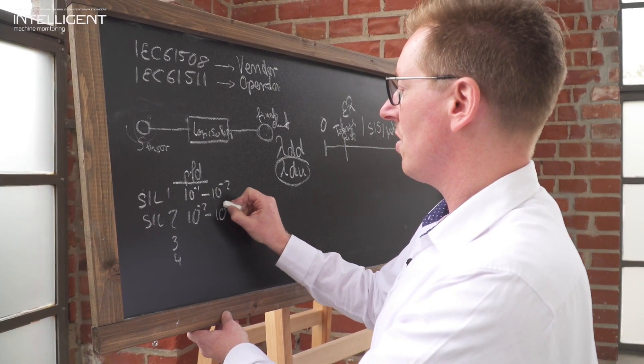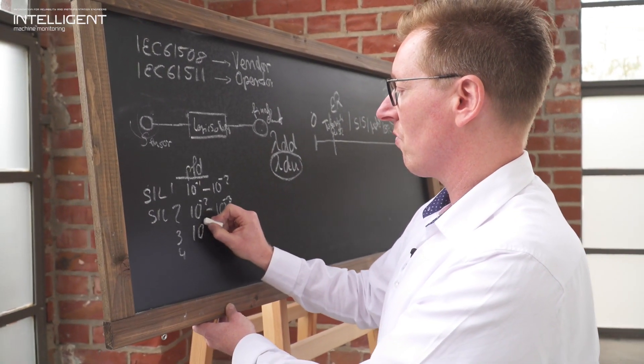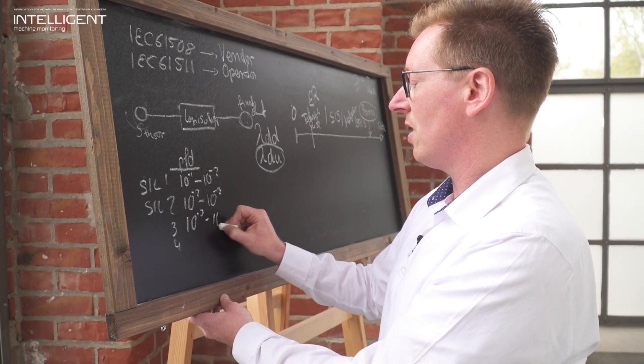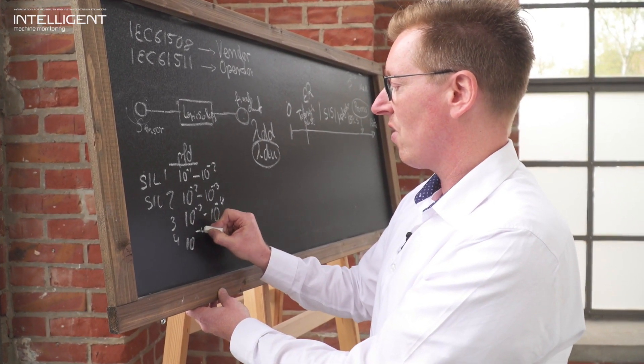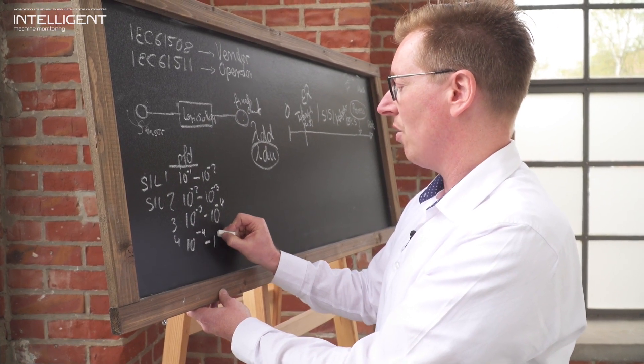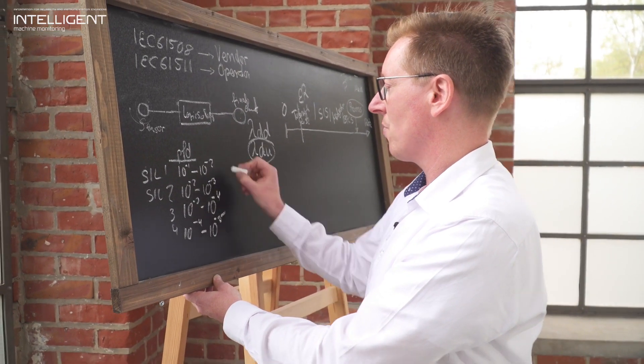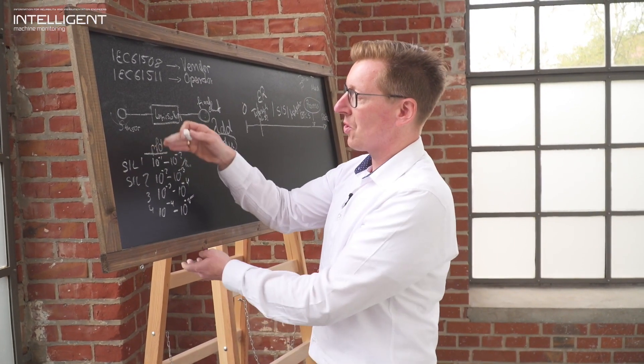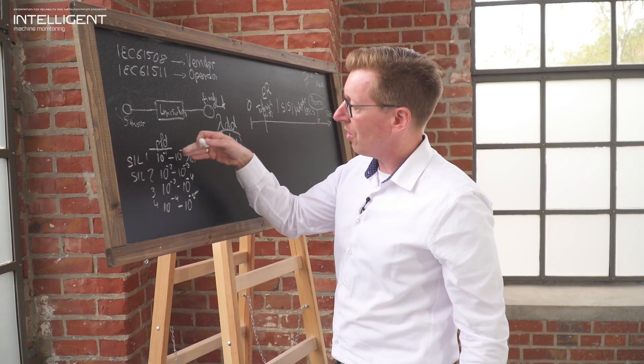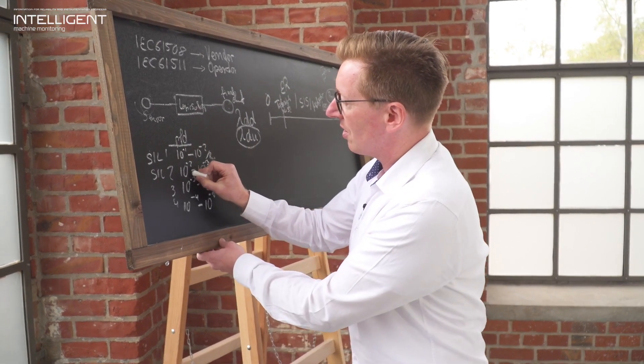So this is 10 to the minus 2 to 10 to the minus 3, 3 to 10 to the minus 4. And for a SIL 4 system, the probability of failure on demand is 10 to the minus 4 and that's actually per hour. So you can see the higher the SIL rating, the lower the probability of failure on demand.